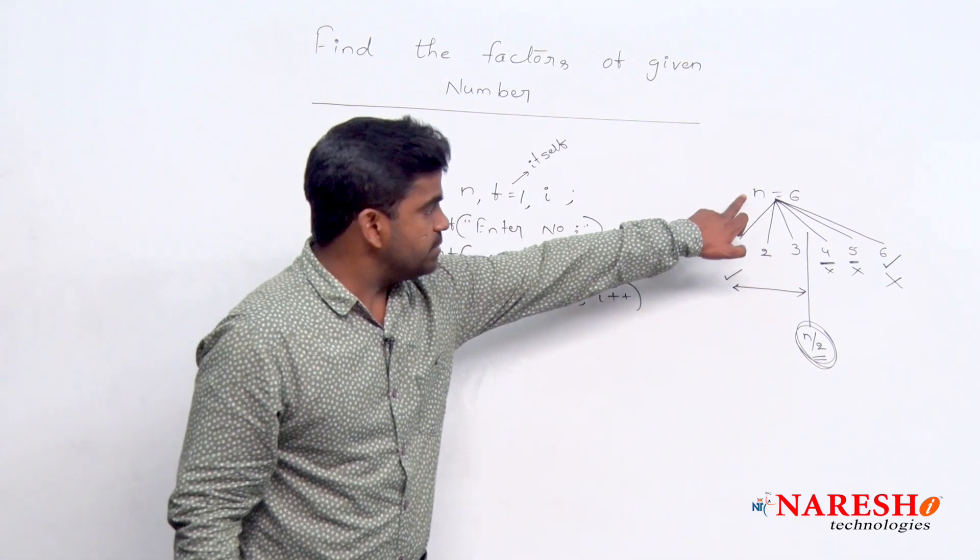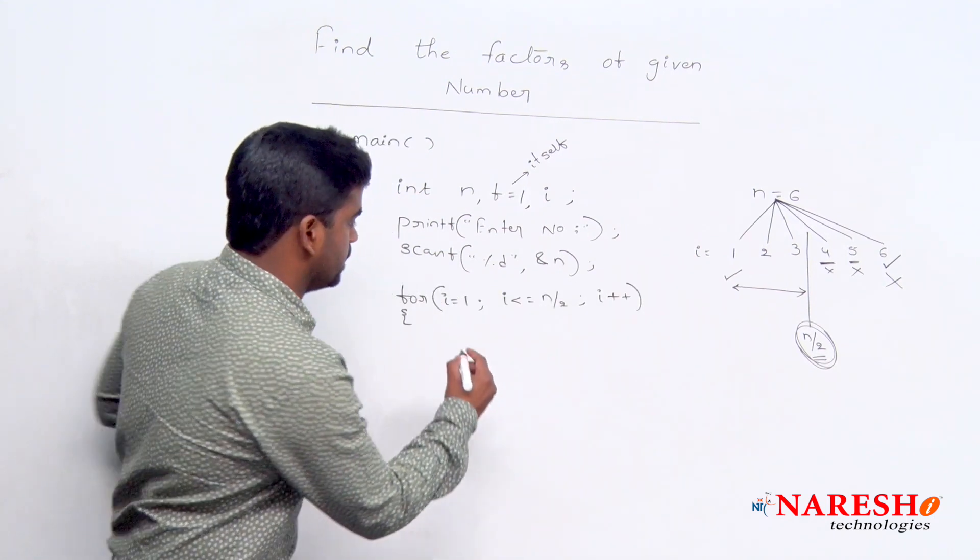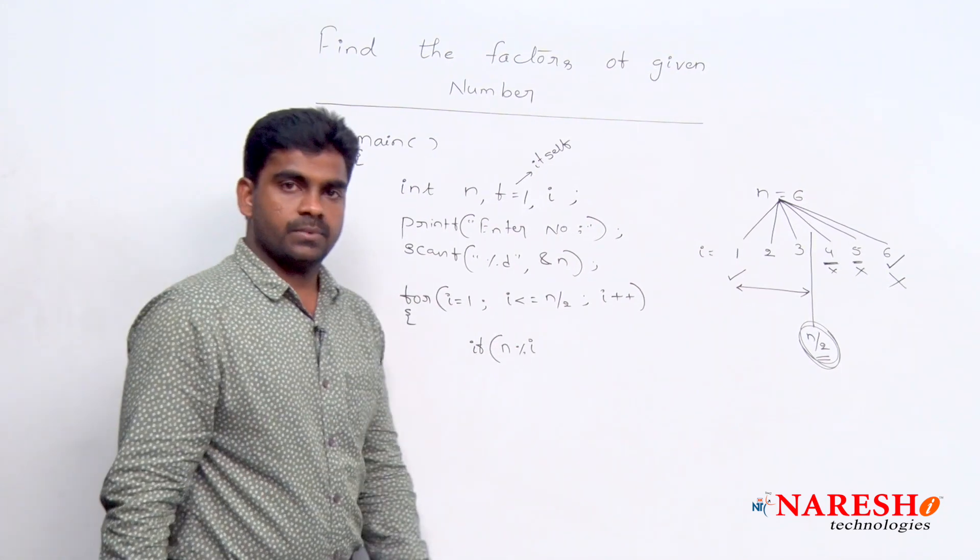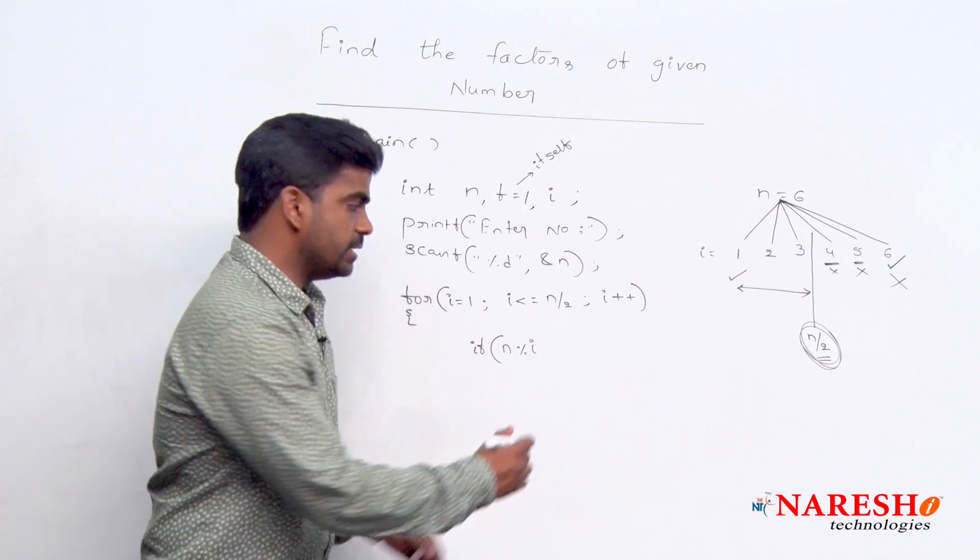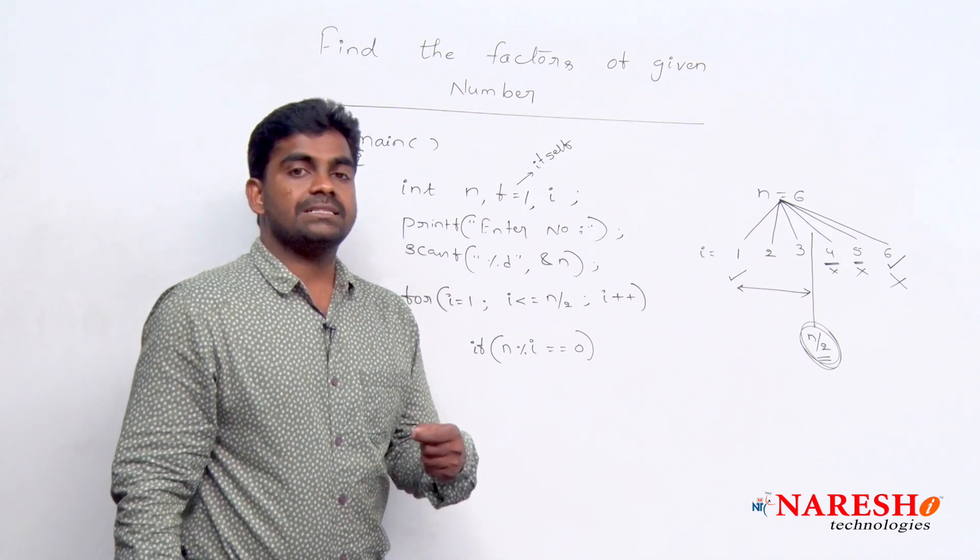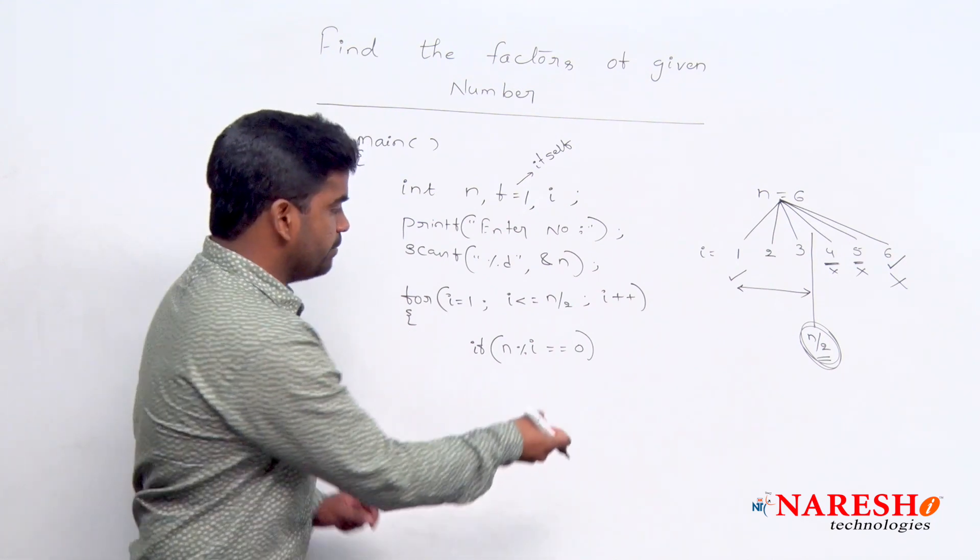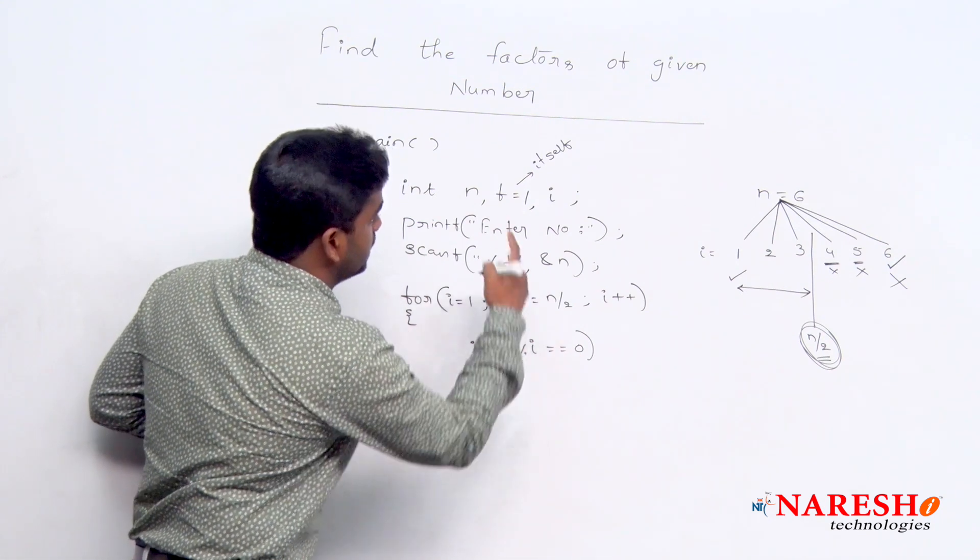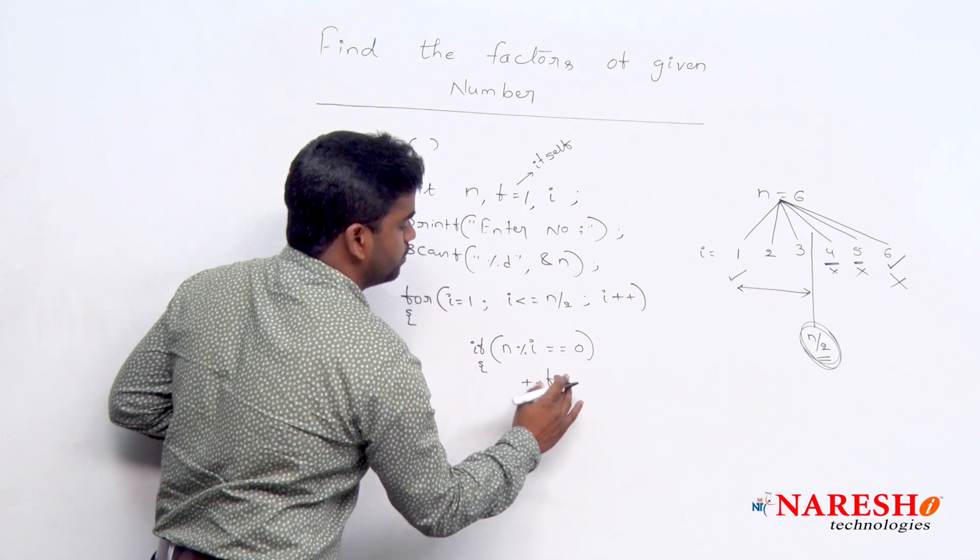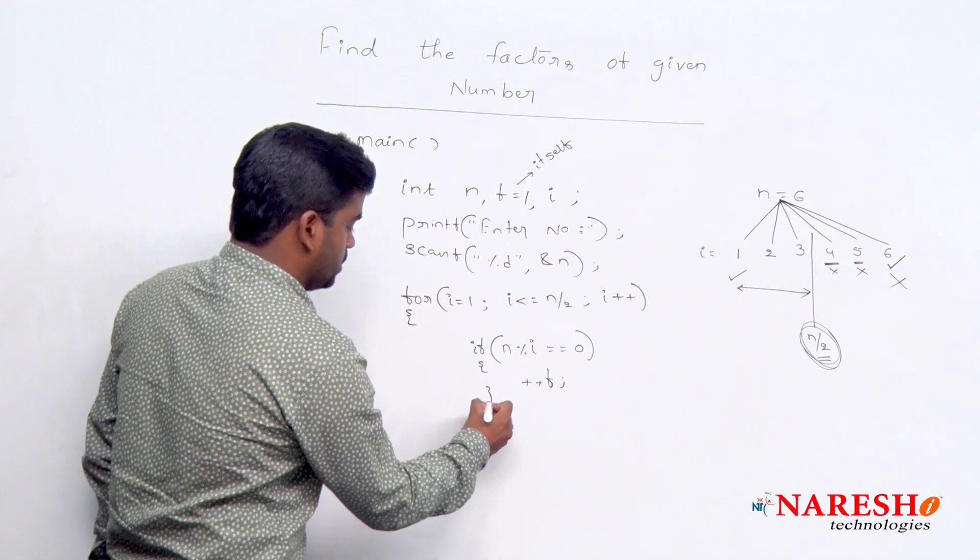Now we are checking n is divisible by i or not. If n is divisible by i, if n mod i equal to 0, because when we can say that the number is divisible means when the remainder is equal to 0. Whenever the remainder equal to 0, just here increase that count value, increase that factor value, f plus plus. Because the variable is f, that is all, this is the code.